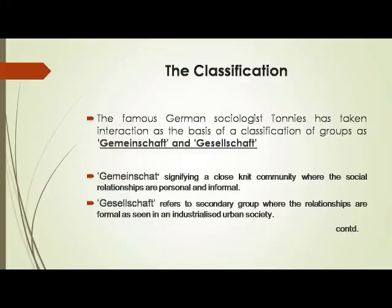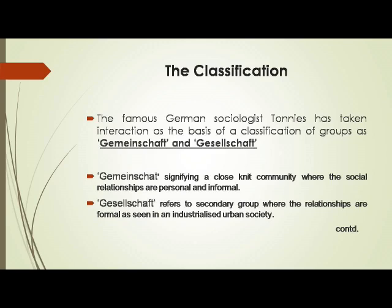The next classification is Gemeinschaft and Gesellschaft. The famous German sociologist Tönnies took interaction as the basis of classification. Gemeinschaft signifies a close community where social relationships are personal and informal, whereas Gesellschaft refers to secondary groups where the relationships are formal, as seen in industrialized urban society.